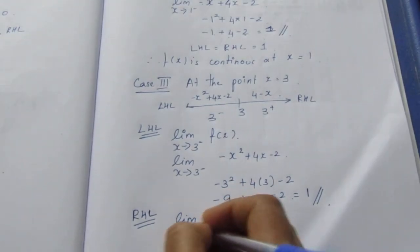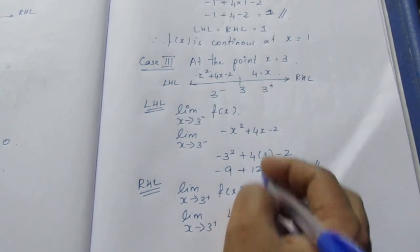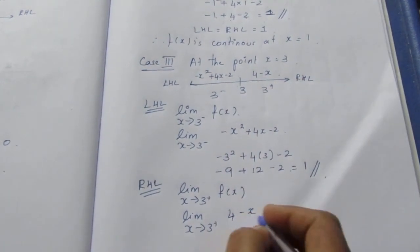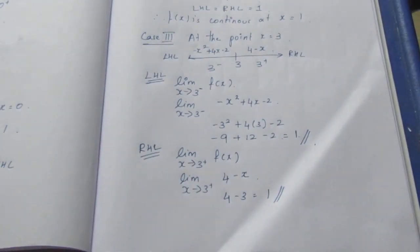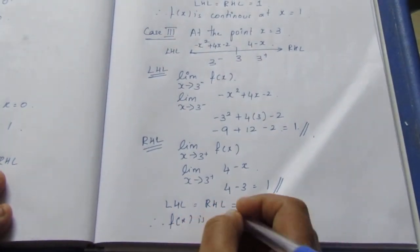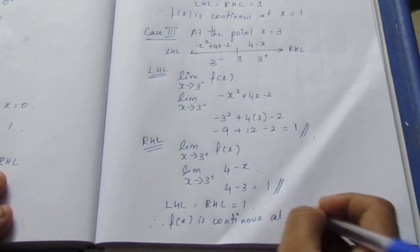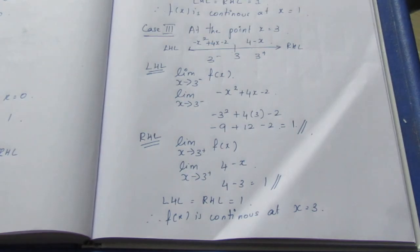Right-hand limit: limit x tends to 3 plus of f(x). For x greater than or equal to 3, f(x) equals 4 minus x. Substituting x equals 3 gives 4 minus 3 equals 1. So LHL equals RHL, meaning f(x) is continuous at x equals 3. If LHL equals RHL the function is continuous; otherwise it is discontinuous. That is the sum. Thank you.